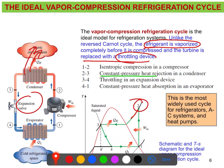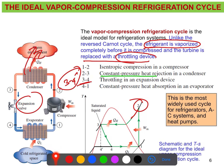At state 3, the working fluid leaves the condenser as a saturated liquid. This saturated liquid enters the expansion valve, undergoing process 3 to 4. Here the expansion is not isentropic — if we replaced the expansion valve with a turbine, the process curve would go to state 4-dash instead of state 4.